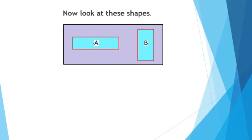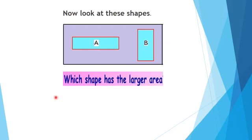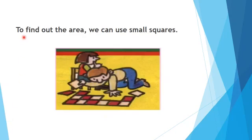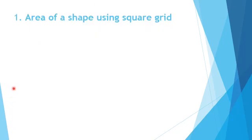Look at these shapes and try to figure out which shape has the larger area. For these pairs of shapes, it is difficult to tell which has the larger area. To help us find out the area, we can use small squares in the form of square strips. Let us find out the area of those shapes using square strips.